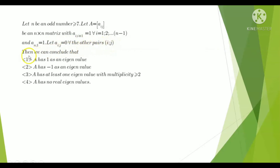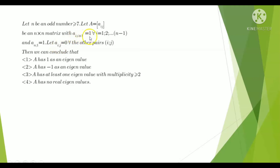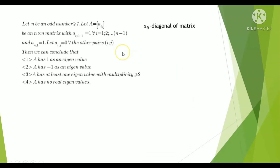All other entries a(i, j) equal zero. We need to determine which of the following are true: (1) A has one as an eigenvalue; (2) A has minus one as an eigenvalue; (3) A has at least one eigenvalue with multiplicity greater than or equal to two; (4) A has real eigenvalues. The diagonal entries a(i,i) are zero, a(i, i+1) are the super-diagonal entries equal to one.